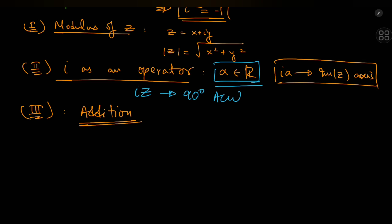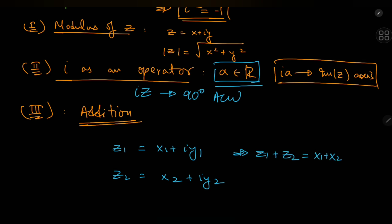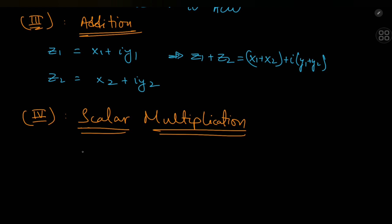First we need to talk about addition of complex numbers. Building on the complex-numbers-as-vectors framework, we know that vectors are added component-wise. So if z₁ = x₁ + iy₁ and z₂ = x₂ + iy₂, adding them means adding their real and imaginary parts: (x₁ + x₂) + i(y₁ + y₂). Another operation is scalar multiplication: if you take a real number c and multiply it by z, this is equivalent to multiplying c with each component, giving cx + icy — so c distributes over the real and imaginary parts to give cx + icy.